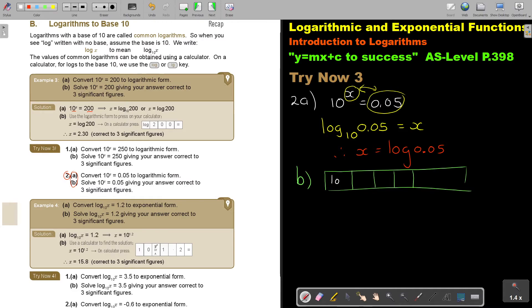So I'm going to press log on my calculator. Then I'm going to press 0. Remember the point. 0, 5, and equals. So 0, 0, 5, equals.